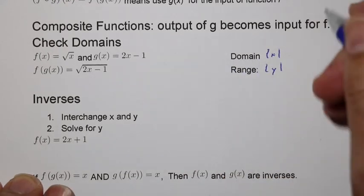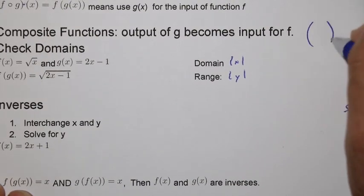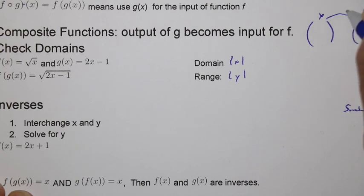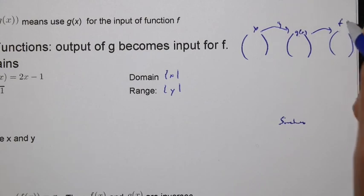We're talking about composite functions. Remember, the output of g becomes the input of f. You could take a look at it as x values here to become, through g, become g of x values. But those can become the input for f of x values. So these inputs will become f.